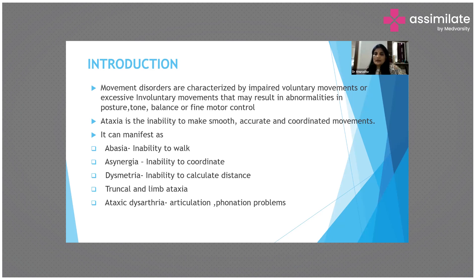Articulation problems are called ataxic dysarthria, related to articulation, phonation, and speech. Ataxia may present as any of the above — abacia, asynergia, dysmetria, truncal ataxia, limb ataxia, ataxic dysarthria — or a combination of two, three, or all of them. The severest form may have all of them.